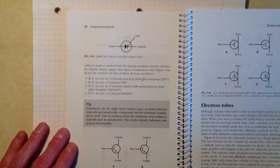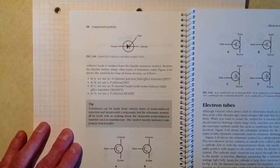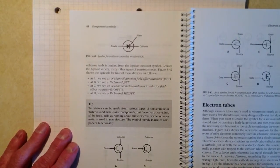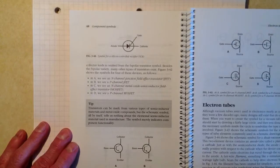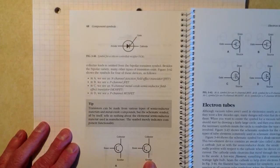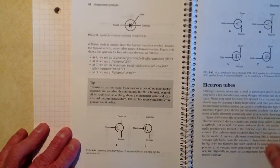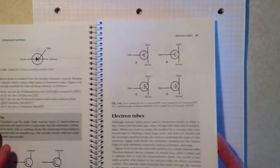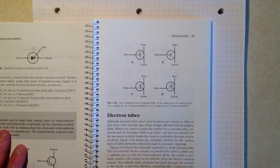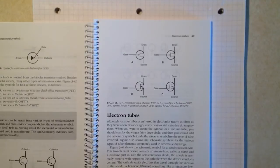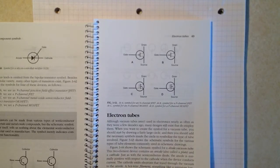You'll find that information in this spiral-bound paper book on pages 48 and 49. There are bipolar transistors on page 48, and some field effect transistors on page 49.